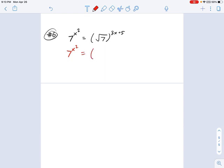And on the right, let's change this to, we'll put another parentheses in here and say that's 7 to the 1 half power. And that's still raised to the 3x plus 5. Now remember, when you raise an exponent to another exponent, you can multiply them when you simplify things. So this becomes 7 to the x squared on the left, equals 7 to the power of 1 half times 3x plus 5.